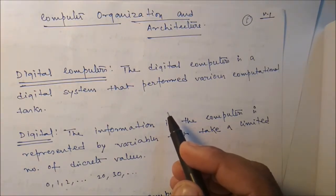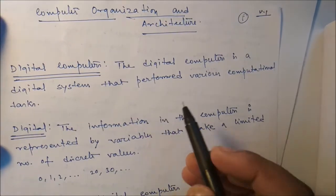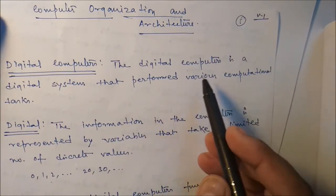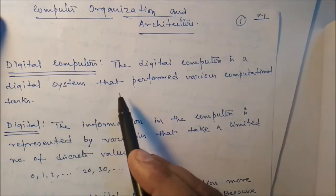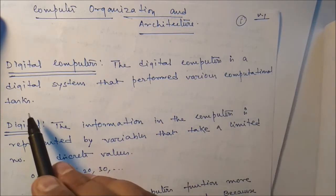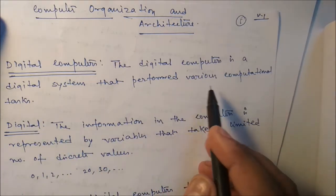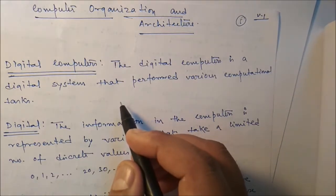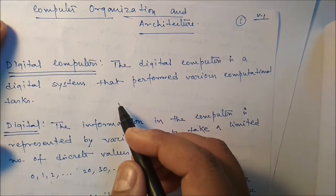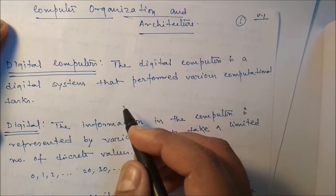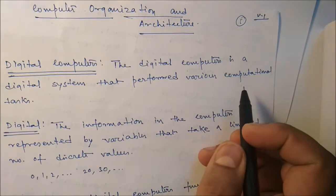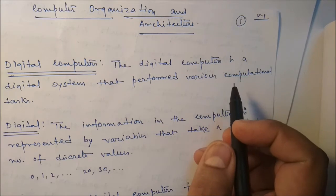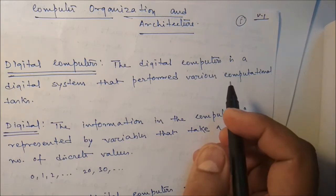First of all, you should know what digital computers are. The digital computer is a digital system that performs various computational tasks. Computational tasks means it may be addition, some arithmetic tasks or logical tasks - addition, subtraction, division, multiplication, or different logical tasks like AND, OR, XOR, etc.